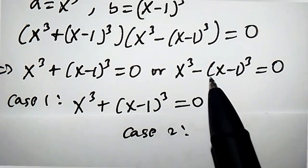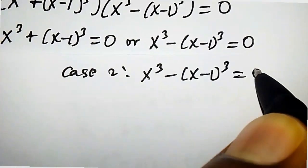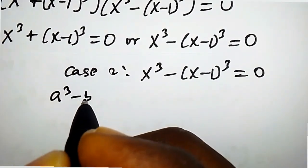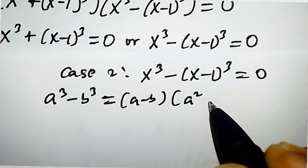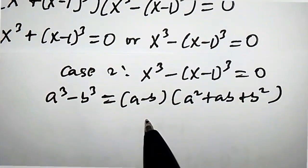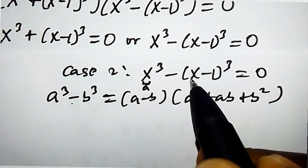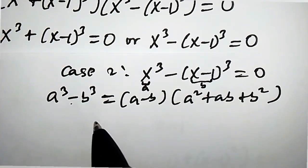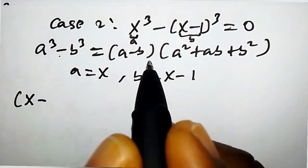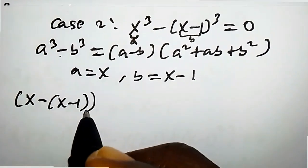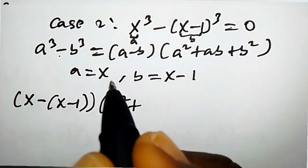For Case 2, we consider x cubed minus x minus 1 cubed equals 0. Recall that a cubed minus b cubed equals a minus b times a squared plus ab plus b squared. Comparing, our a is x and b is x minus 1. So we have x minus x minus 1, times x squared plus x times x minus 1, plus x minus 1 squared, equals 0.